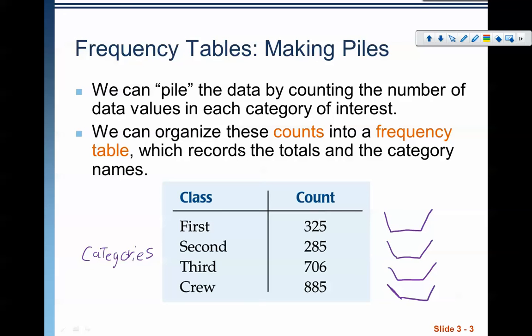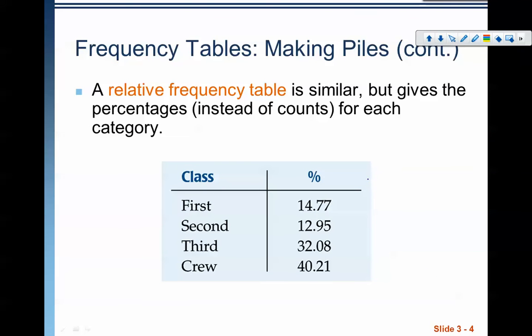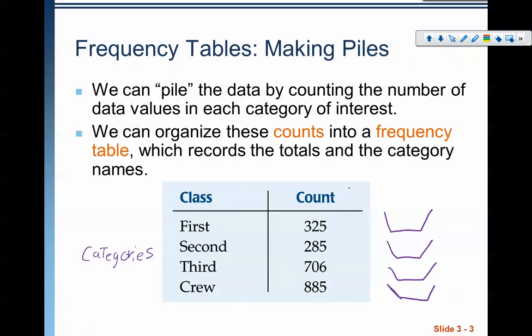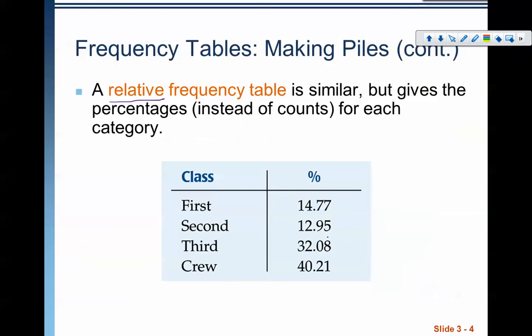Along the same lines, we have what's called a relative frequency table. Notice the only difference is that word relative. A relative frequency table is really the same thing, but instead of giving a raw count, it gives percentages for each category. So this 14.77 is coming from taking 325, that first count, over the total. This would be like 325 over the total of all of them added together would make this percentage. Same with the second, third, and fourth. This should, when you add them all together, add up to 100%, or at least very close to 100%. There may be a slight rounding error, but this should be 100% when you add up everything in a relative frequency table.